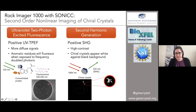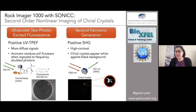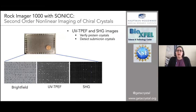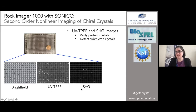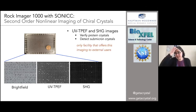In this particular example, at the bottom you see this kind of bird-like crystal. This is one of those occasions where this is the only condition that generated a crystal, and you would not have picked it out if you were only looking at brightfield. We do a lot of these images over the course of time — brightfield multiple times, and UV TPF and SHG once during the imaging. We are the only facility that offers this type of imaging for high-throughput screening to external users.